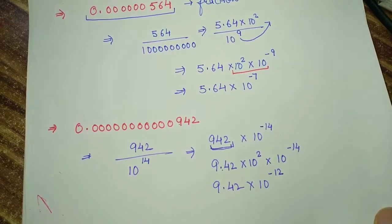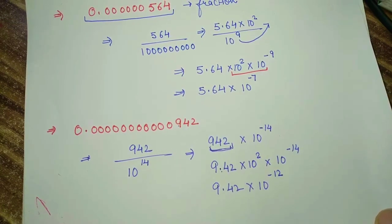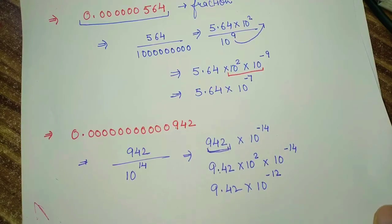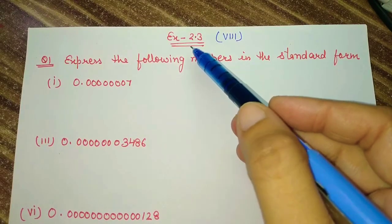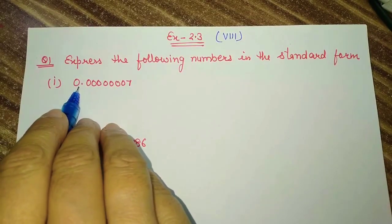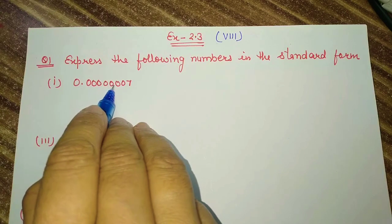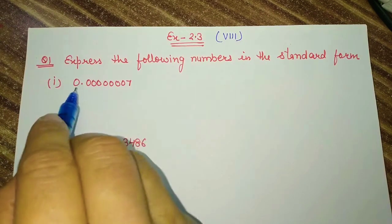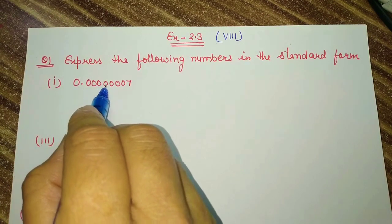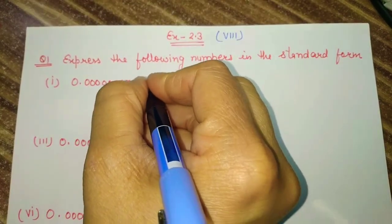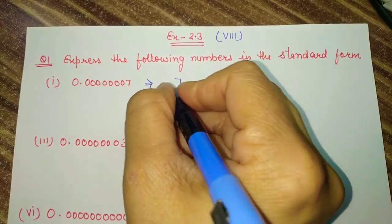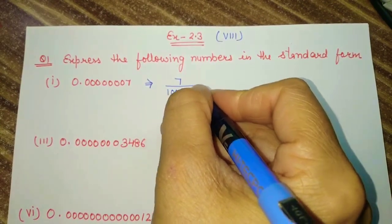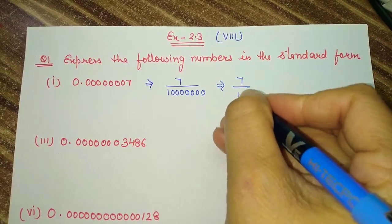Now in this way we solve Exercise 2.3. You have to solve this exercise by yourself, and if you face any doubt you can ask. Question 1, first part: they have given 0.000000007. First, count the number of digits after the decimal: 1, 2, 3, 4, 5, 6, 7, 8. So we convert this number as a fraction and write 7 upon 10 to the power 8.